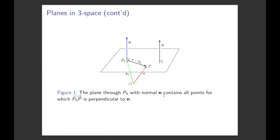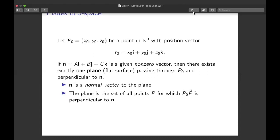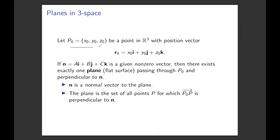That's all points for which the vector P0P is perpendicular to the normal vector n. The strict mathematical definition will be as follows: let P0 be a point in R3 space with a position vector R0. We define the normal vector n as a given non-zero vector. With a point and a normal vector, we can define a plane, which is a flat surface passing through P0 and perpendicular to the normal vector n.